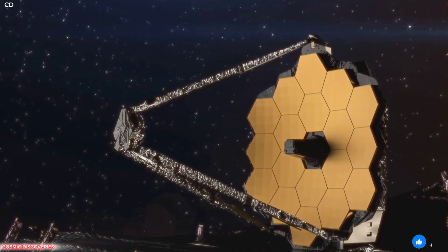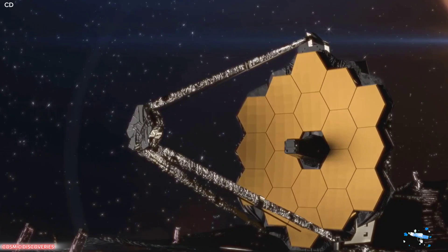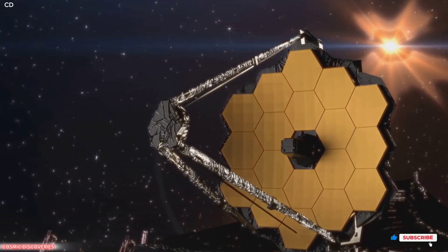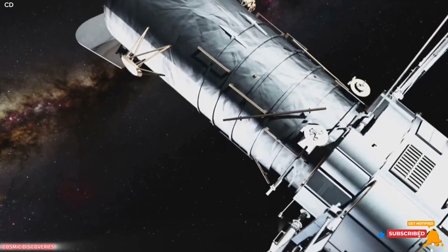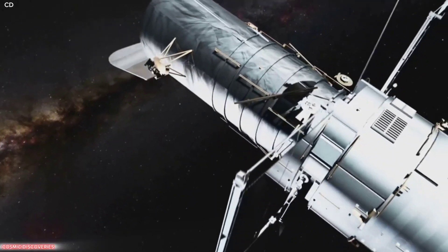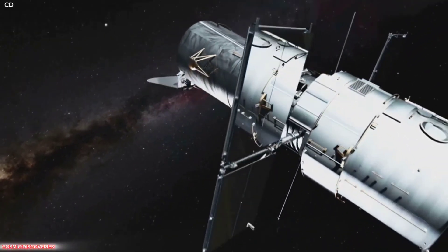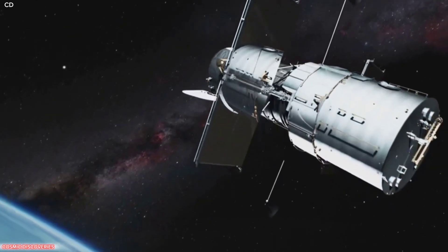To grasp the significance of this image, we must understand the James Webb Space Telescope itself. JWST is an engineering marvel, our most advanced eye in the sky, orbiting a million miles from Earth. Its distant vantage point lets it see the universe with unprecedented clarity.